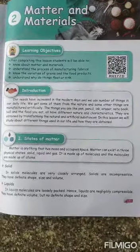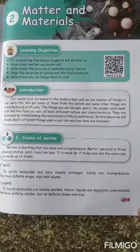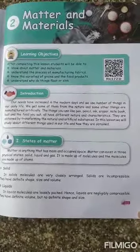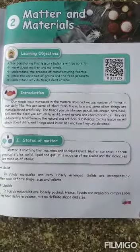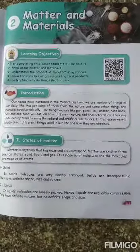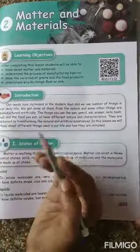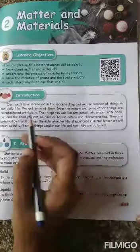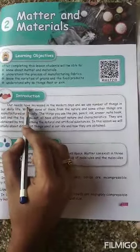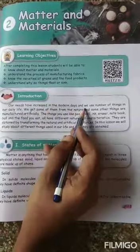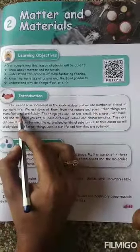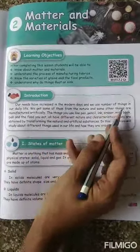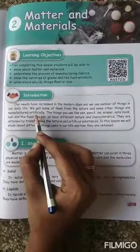Good morning children. Today in our science class we will see the second unit: matter and materials. Here is an introduction about our needs. Our needs have increased in the modern days and we use a number of things in our daily life. We get some of them from nature and some other things are manufactured artificially.